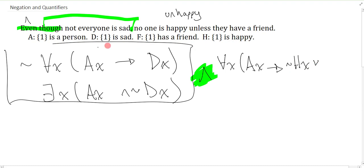So unhappy is not Hx, unless is just or, they have a friend is Fx. And that's how you would symbolize the negation with the existential here that seems to actually be modifying the happy as opposed to the person.